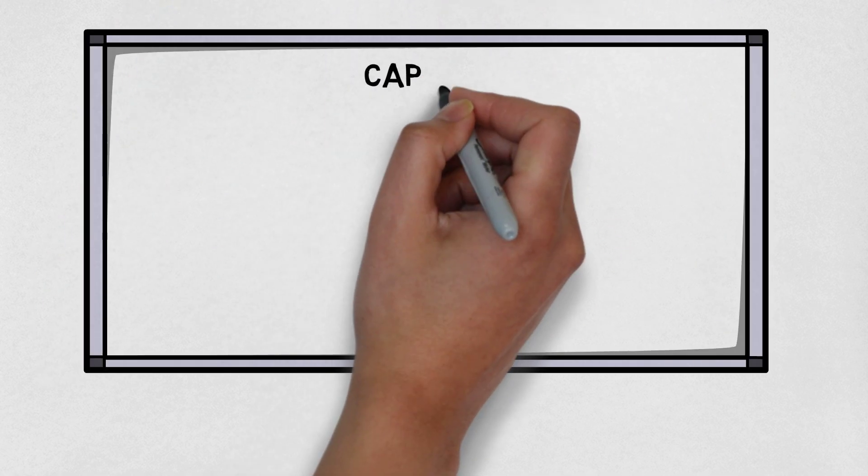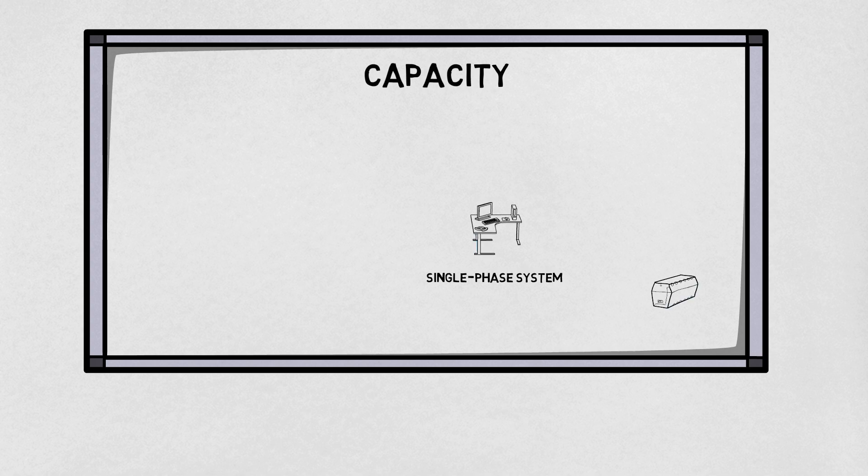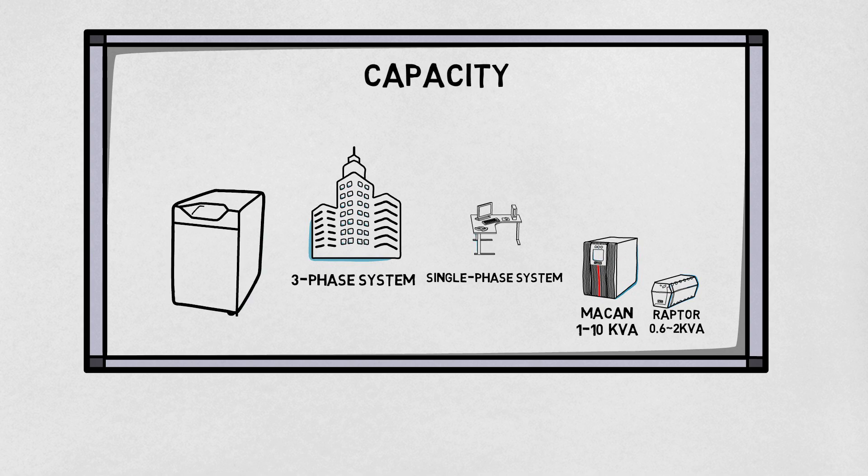Here are some common characteristics. First, capacity. 3-phase UPS has tremendously larger capacity than single-phase UPS due to different load demands.